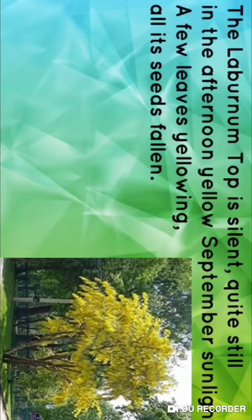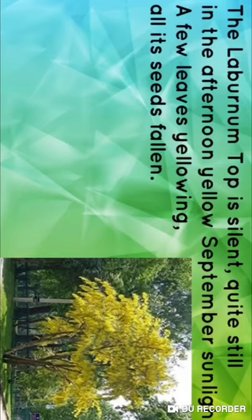The Laburnum Top is silent, quiet, still in the afternoon yellow September sunlight. Students, Laburnum Top is a short-heighted tree, which is called 'peed' in Hindi. This is a September afternoon description, where the poet tells us that the peed is in the afternoon — silent, quiet, still in the middle of the tree.